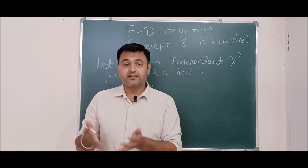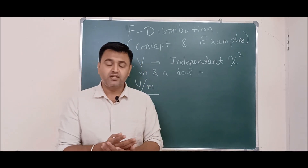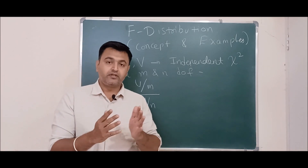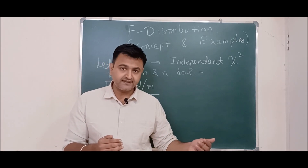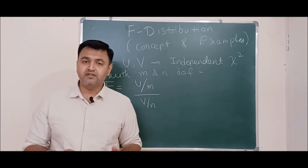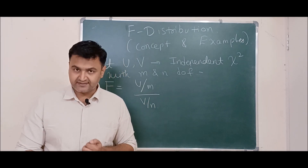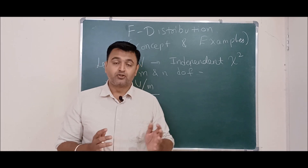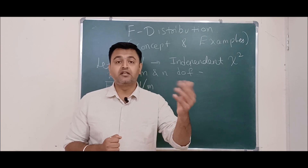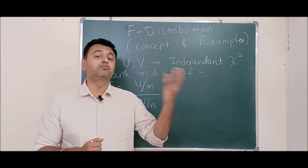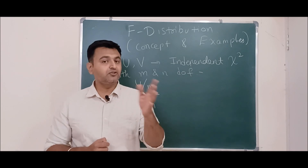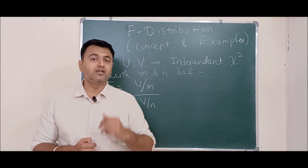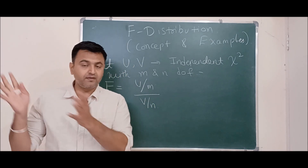Before introducing F distribution, let's recall what we have studied before. We have seen Z test or Z distribution, T test, and chi-square test or chi-square distribution. When we studied sampling distributions, the important statistics we use are sample mean and sample variance. When we play with sample mean, the central limit theorem tells us that x-bar is normally distributed, and we can use either Z test or T test. If we know the population standard deviation we use Z test; if not, we replace sigma with the sample standard deviation s and use the T test.